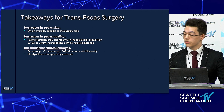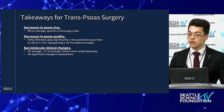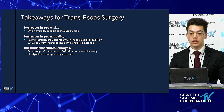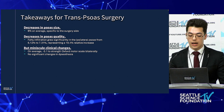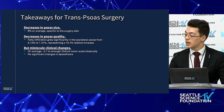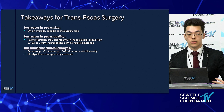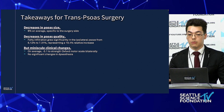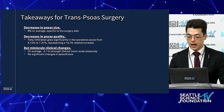So what are the takeaways? Decreases in psoas size of about 6% on average specific to the surgical side, and decreases in psoas quality — on average about a 1% relative increase in fatty infiltration, which was fairly high. But we see minimal clinical changes — no side-specific changes in terms of clinical outcome, and a very minor decrease in strength, like 10% of a grade. So very minor.